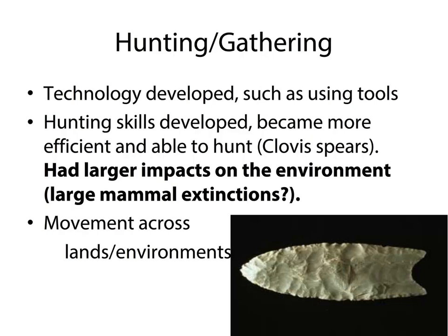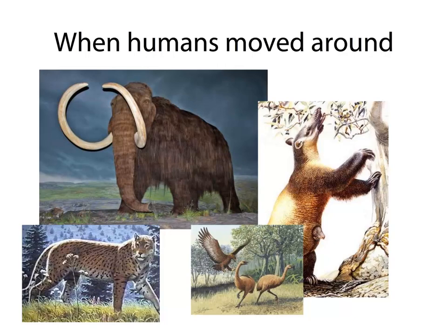As we spread out across the earth with many migrations out of Africa — by the way, everybody came from Africa, all homo sapiens — it's interesting and somewhat sad that as humans moved around, we started to take out a lot of the large mammals. For example, we had woolly mammoths in North America, giant sloths, big cats, big birds. And wherever humans went, unfortunately, extinctions followed.